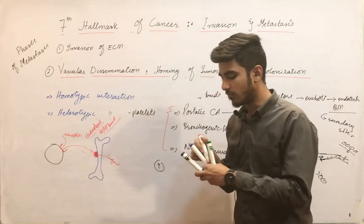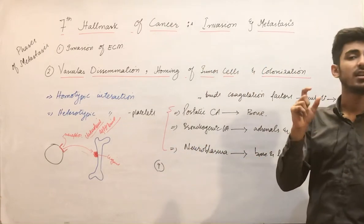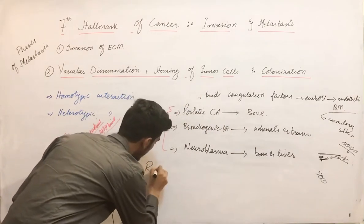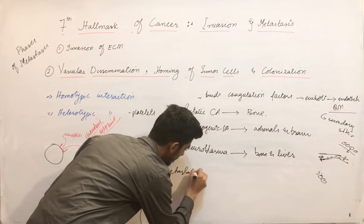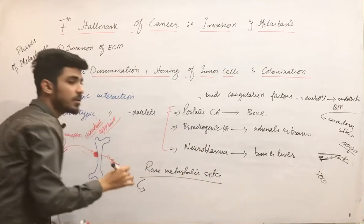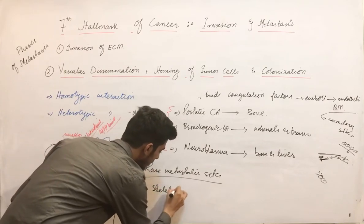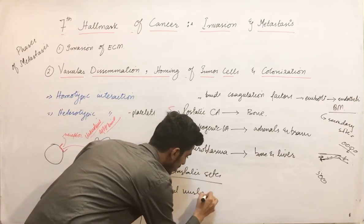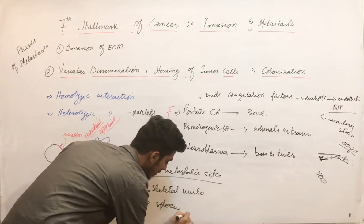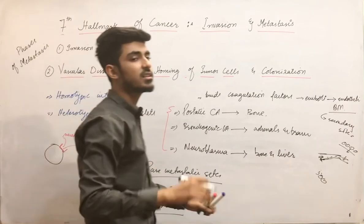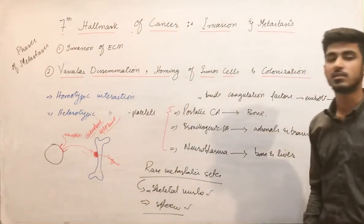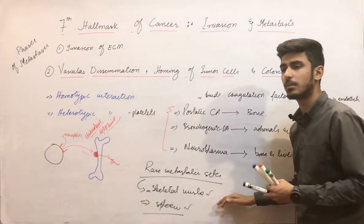There are also certain rare sites of metastasis. Remember that the rare metastatic sites are number one: skeletal muscle, and number two: the spleen.